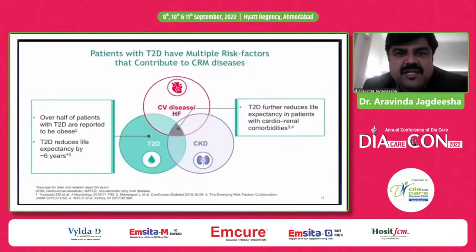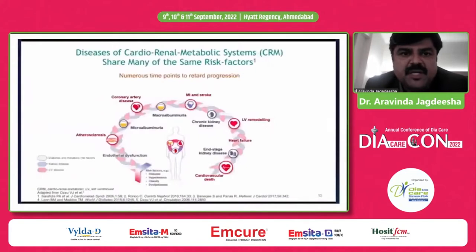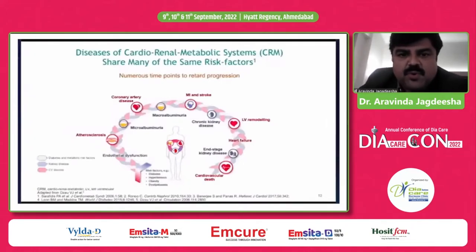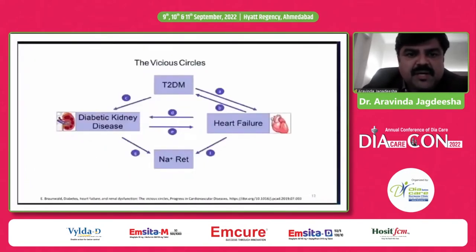Patients with type 2 diabetes have multiple risk factors contributing to cardiorenal metabolic (CRM) diseases. Over half of patients with type 2 diabetes are reported to be obese. Type 2 diabetes reduces life expectancy by six years and further reduces it in patients with cardiorenal comorbidities. The diseases of the cardiorenal metabolic system share many of the same risk factors, and there are numerous time points to retard progression — from MI, stroke, chronic kidney disease, heart failure, to end-stage renal disease, all interlinked.